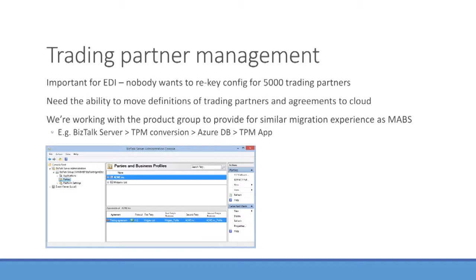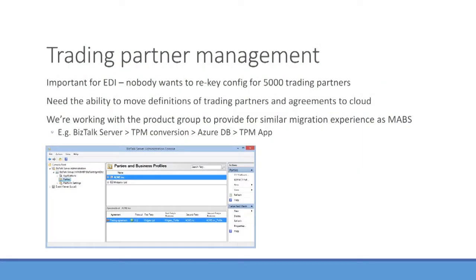Trading Partner Management is another API app in that componentized decomposition model. You may have many thousands of trading partners already set up — they go into a SQL database on-prem — and you want to be able to move those rather than re-key them all. BizTalk services provided a tool to take a BizTalk environment, take those trading partners, and do the conversion to the new schema to upload them into a SQL database in Azure. The formats will be similar, so you should expect a similar experience, and it's something we're working on to handle situations with thousands of trading partners.